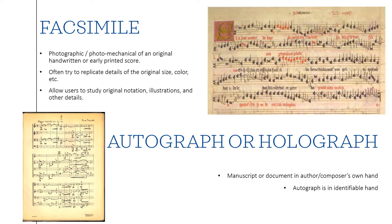Facsimiles are photographic representations or reproductions of an early version, typically of a manuscript or a very early printed score. They might accompany an edited score or appear alone, and they often try to replicate the details of the original, sometimes down to holes in the page or raised painted letters. Often facsimiles will be published that recreate the autograph or holograph — that is, the copy of the work that survives in the creator's own handwriting. If that survives, it may be replicated at the beginning of an edition or as a standalone edition.